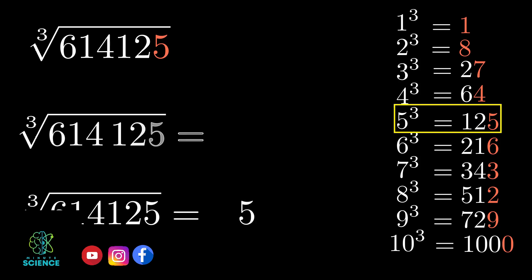The first part is 125, and the second part is 614. We need not perform any action on the first part. All we need to work on is the second part. In this problem, the second part is 614, and it is between 8 cube and 9 cube values, that is 512 and 729.